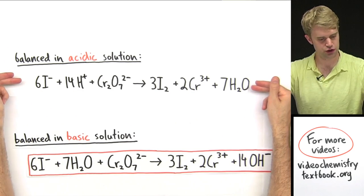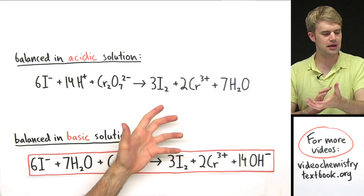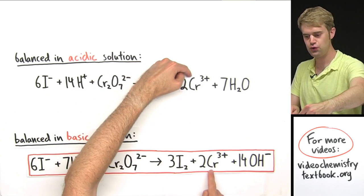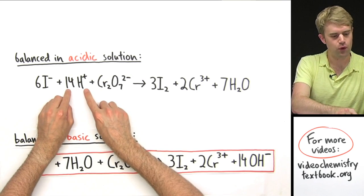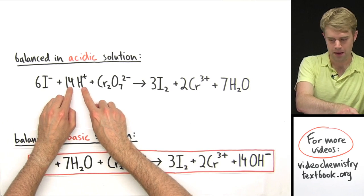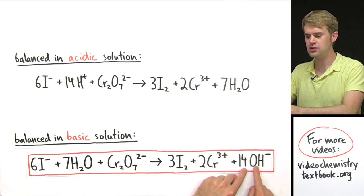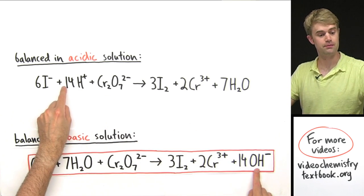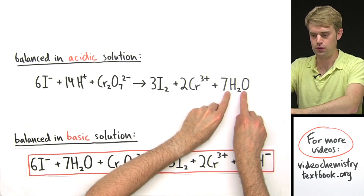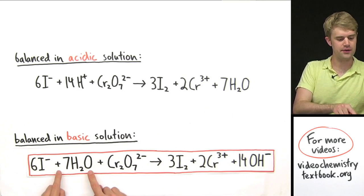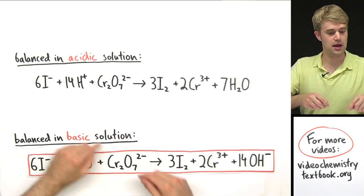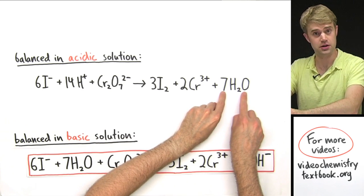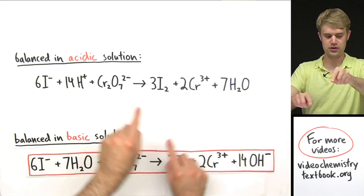Let's compare the equations balanced in acidic and basic solution. What's the same: both have 6 I⁻, Cr₂O₇²⁻, 3 I₂, and 2 Cr³⁺. What's different: the acidic equation has 14 H⁺ on the left, while the basic equation has 14 OH⁻ on the right side — the H⁺ were replaced by OH⁻ and moved to the other side. Also, the 7 H₂O molecules switch sides: they're on the right in the acidic equation but on the left in the basic equation.